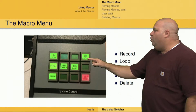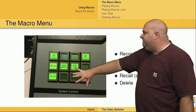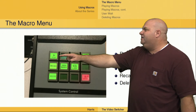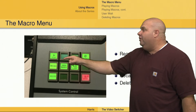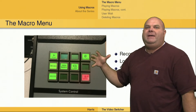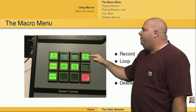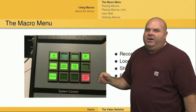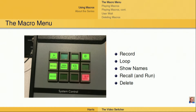First of all, we have the ability to record a macro or re-record a macro if we want to use this same slot. We can tell that this macro has already been recorded — this particular macro has a play button here, which means we have a recorded macro in this slot. If we want to record over the top of it, we can push that record button. The switcher will say we've already got something here — do you want to record over the top of it? You would just say yes.